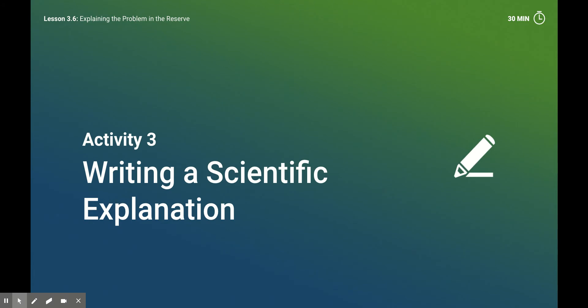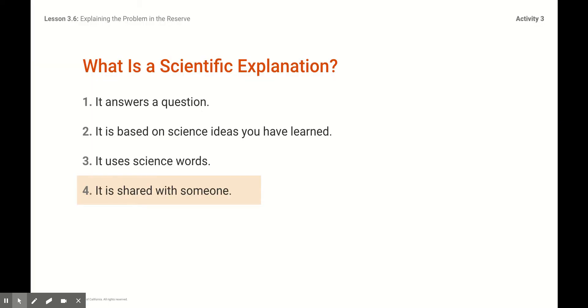Here is your final activity. You're going to write a scientific explanation. You're going to put all of the information that you have learned from this lesson and all of the other lessons. And you're going to write down some ideas that you think are the reason why the chalta trees are not growing. And be very specific and use some scientific words. Because we have to give this information to the scientists to help them solve that question.